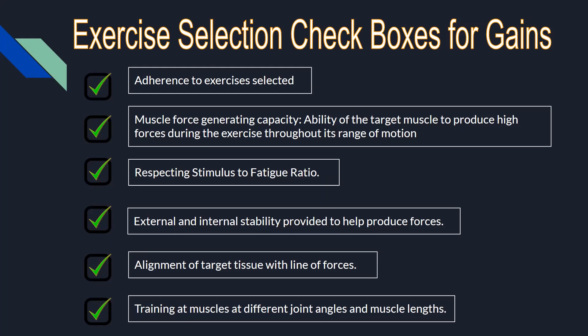Next is respecting the stimulus-to-fatigue ratio, or SFR. SFR is the relationship between how stimulative an exercise is and how much fatigue that movement causes. An exercise that produces more fatigue but less stimulus is a poor choice compared to something which causes more stimulus but less fatigue. For example, if someone has long femurs or a long torso, they would need to hinge a lot forward during a squat, making it more like a deadlift — causing a lot of lower back stress and fatigue. In that case, one can simply perform a chest-supported hack squat, leg press, or Bulgarian split squat, providing more stimulus with less lower back fatigue.